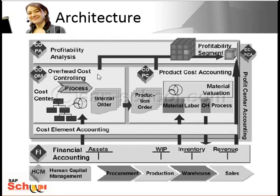Management Accounting has different components. First you have COOM, which is Overhead Cost Controlling. COOM allocates the costs that cannot be assigned directly to the goods and services of a company according to their cause. Account assignment objects for such costs include cost centers and internal orders. Using the planning process, it is possible to plan the costs and internal activities to calculate prices for the activity types.